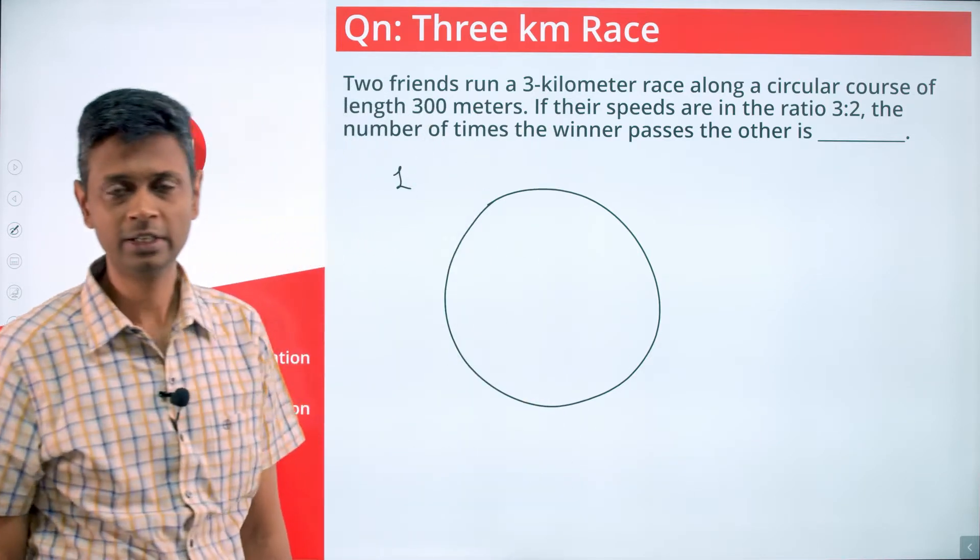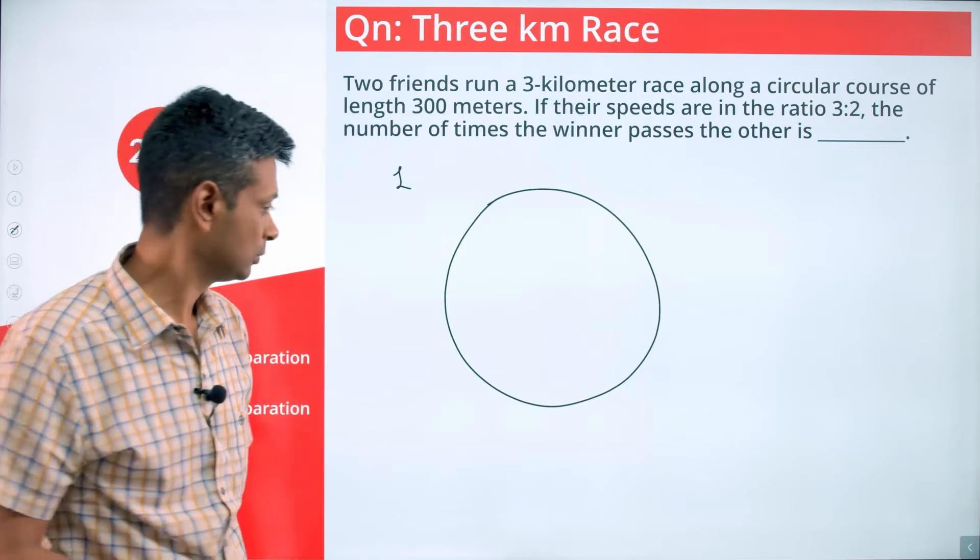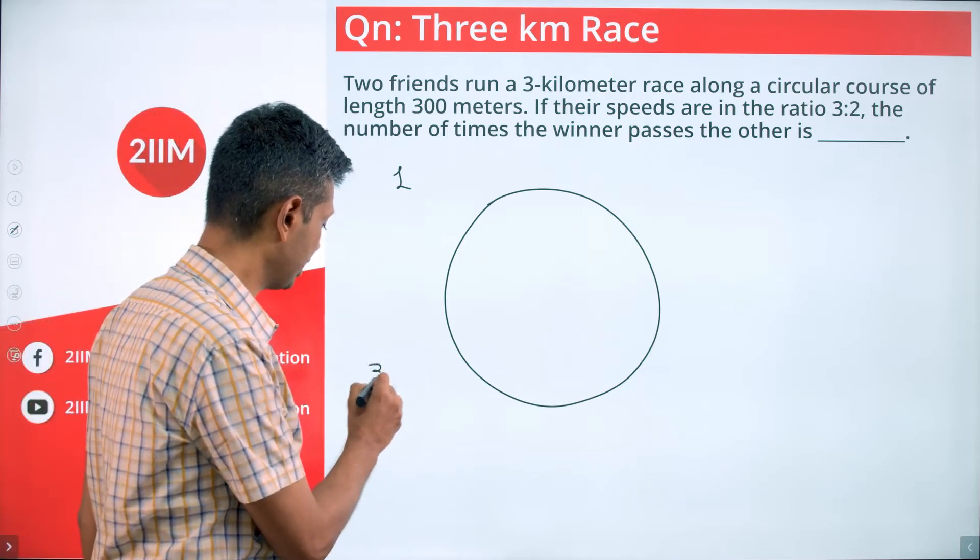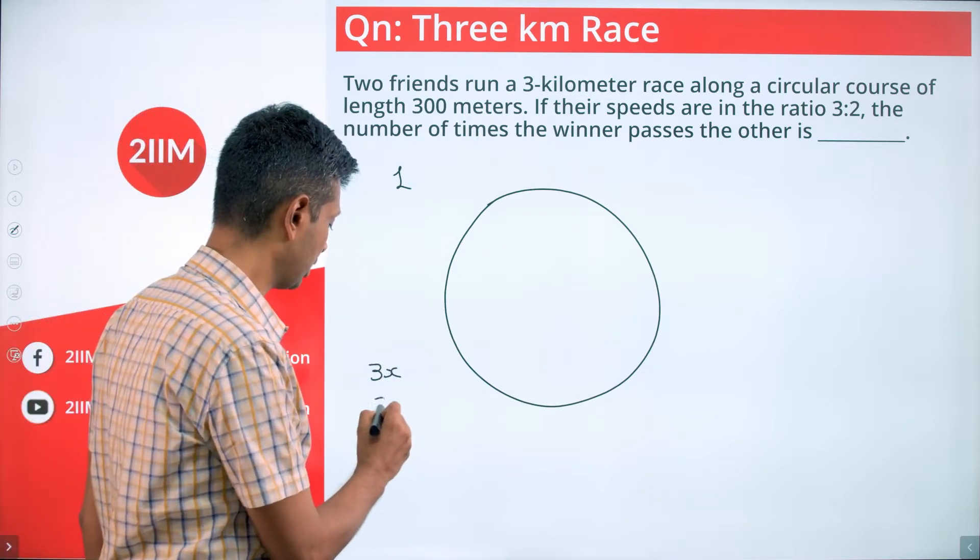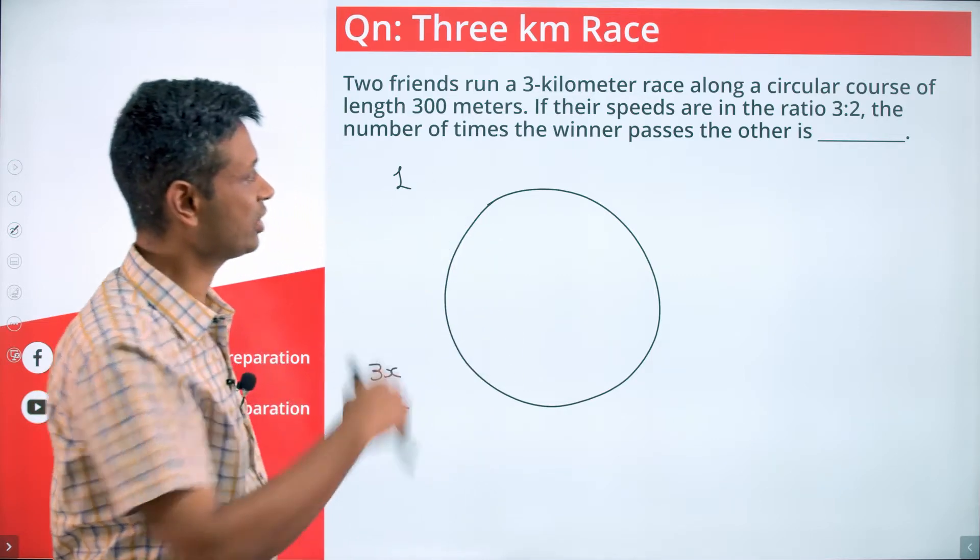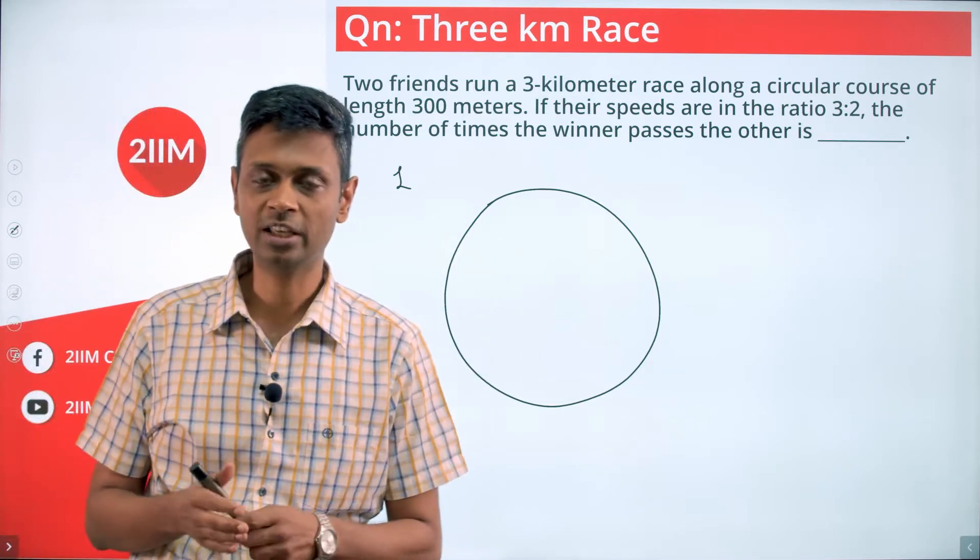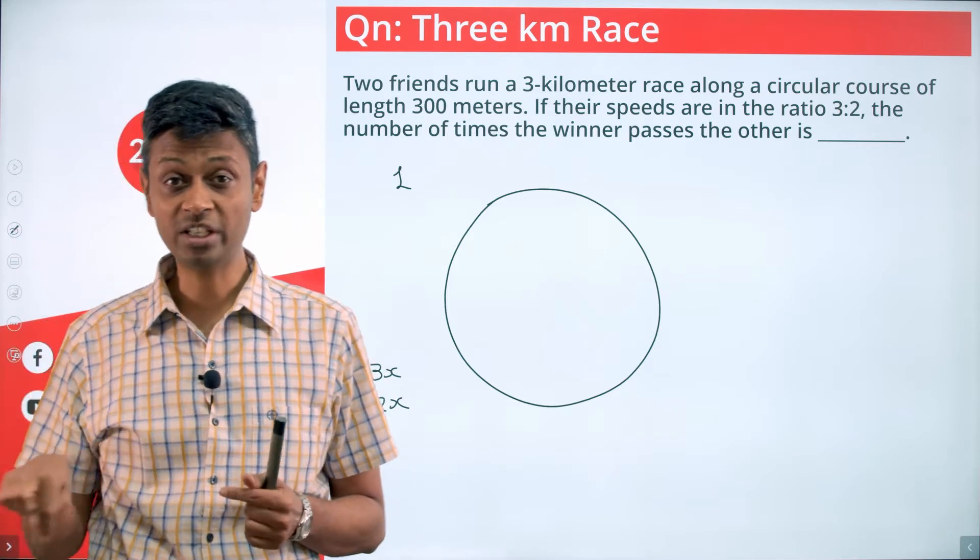Anytime the first guy travels 3x, the second guy will travel 2x. Their speeds are in the ratio 3 is to 2. They start, they keep going. The first guy covers 3x, the second guy will cover 2x.